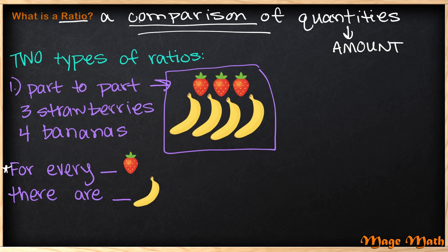You should have guessed three. And how many bananas are there? Four. So for every three strawberries, there are four bananas. This here is our ratio because we are comparing the number of strawberries or the quantity of strawberries to the quantity of bananas.